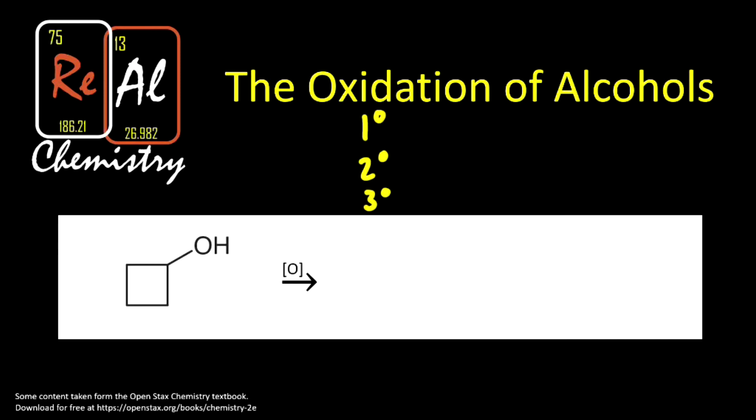An oxidation of an alcohol can be represented like this. We'll have an alcohol, so here's our OH group, and we'll have this little O above the arrow which stands for oxidize. So whenever you see this setup, you know what it's asking you to do is predict the product of the oxidation reaction.